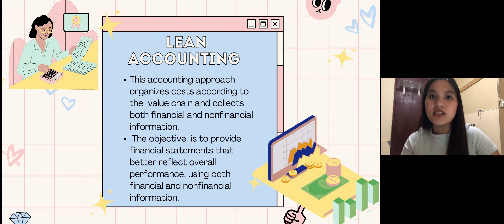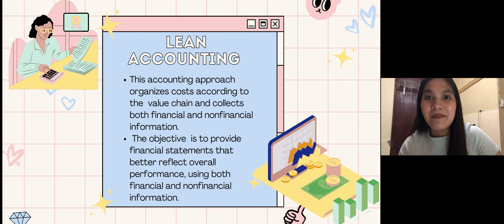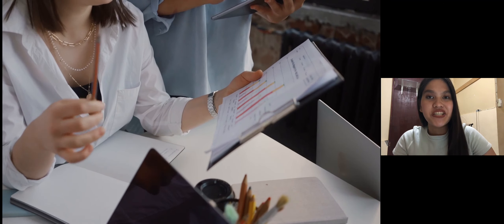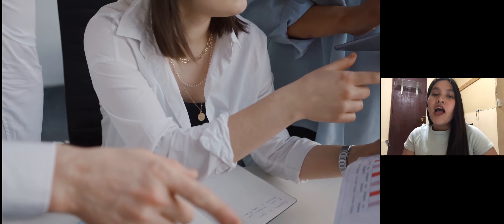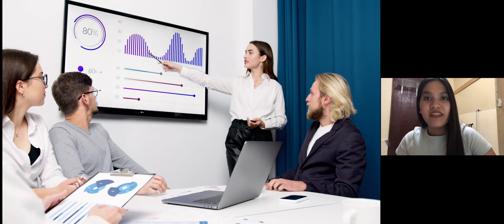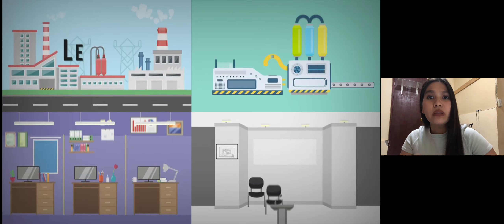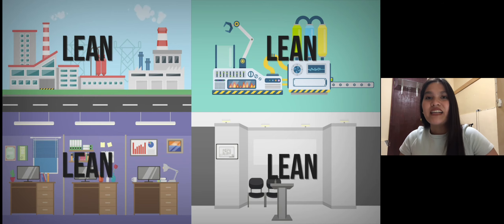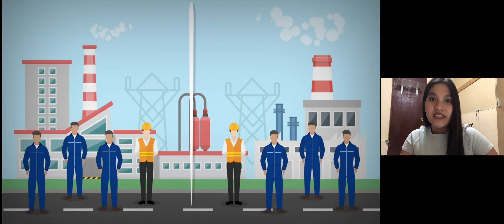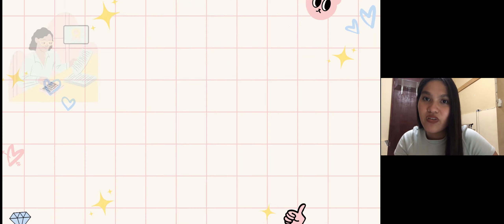Lean accounting is an accounting approach that organizes costs according to the value chain and collects both financial and non-financial information. Its objective is to provide financial statements that better reflect overall performance. While accounting cannot always keep up with changes in company operations, it should constantly follow. Many organizations' conventional cost management strategies have been altered as a result of multiple changes in structural and procedural activities defined for a lean firm. Traditional accounting systems — particularly those using standard costing, activity-based costing, or other full absorption methods — are designed to support traditional management methods.